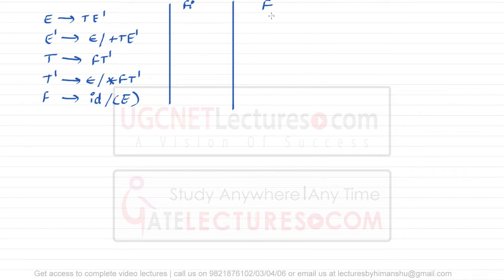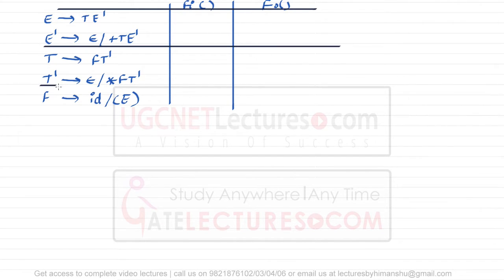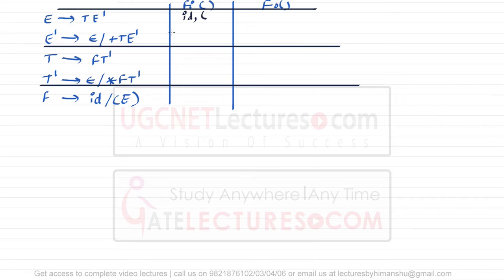Finding the FIRST and FOLLOW for this grammar is the most difficult task. If you can find the FIRST and FOLLOW for this particular grammar, then you can find FIRST and FOLLOW for every possible grammar. The FIRST of E is id and opening bracket, because T can be replaced by F, and F can be replaced by id or opening bracket. FIRST of E' is epsilon and plus. FIRST of T is id and opening bracket. FIRST of T' is epsilon and star. FIRST of F is id and opening bracket.